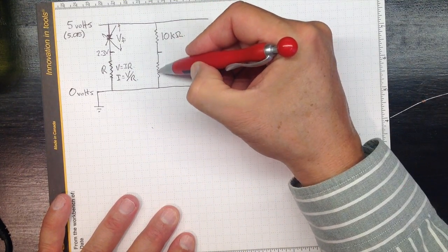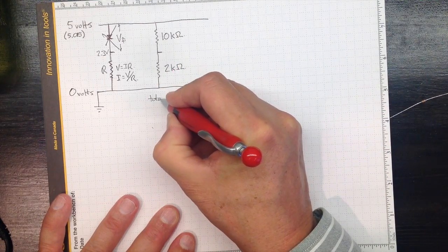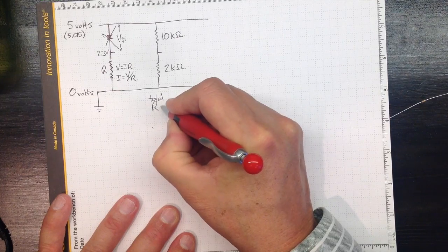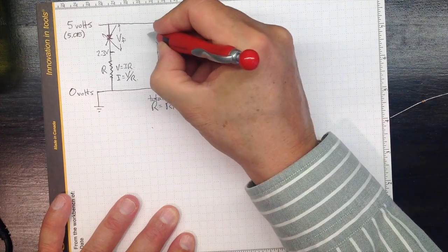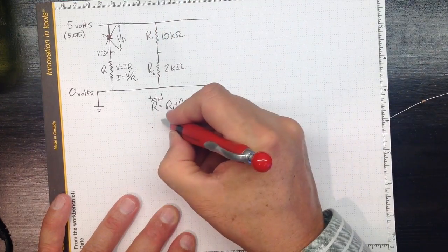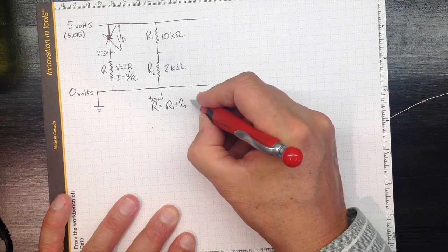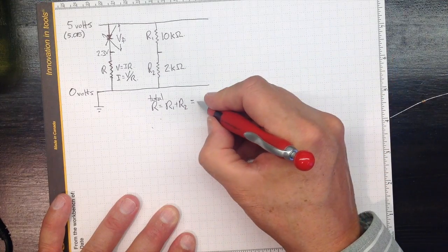These resistors are in series, so the resistance is added, so the total R is R1 plus R2. So in this case the resistance is then 10 plus 2 is 12,000 ohms.